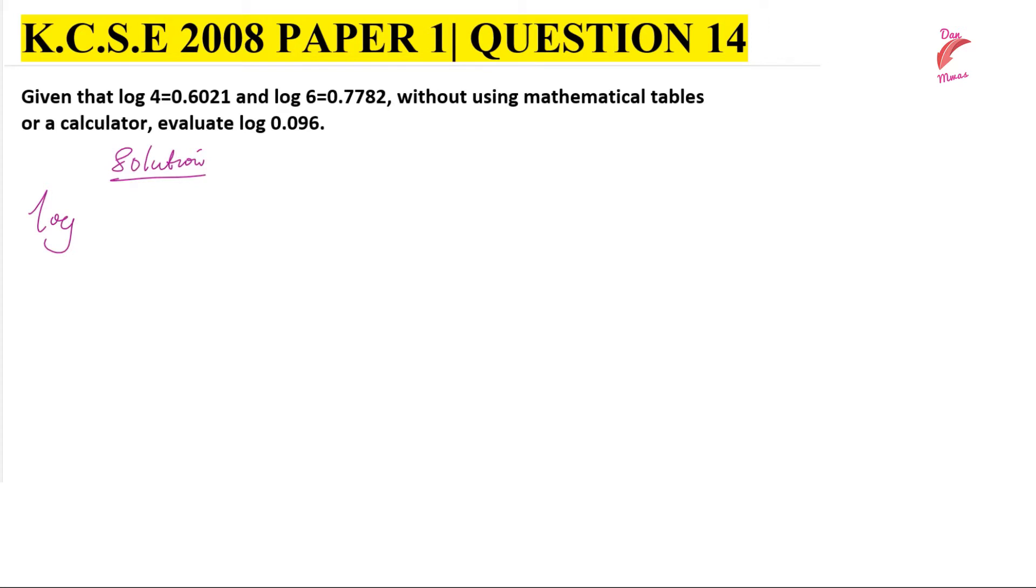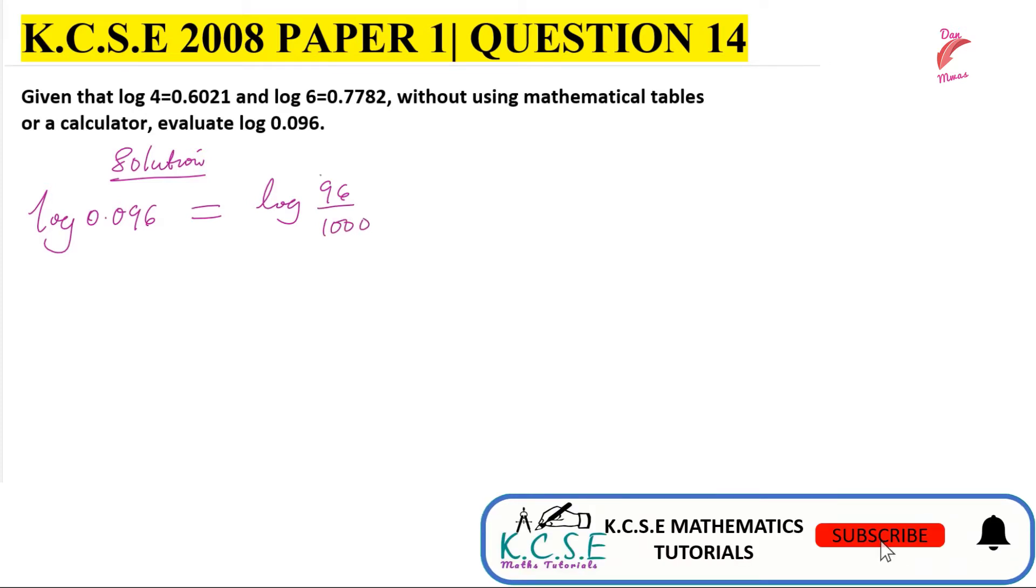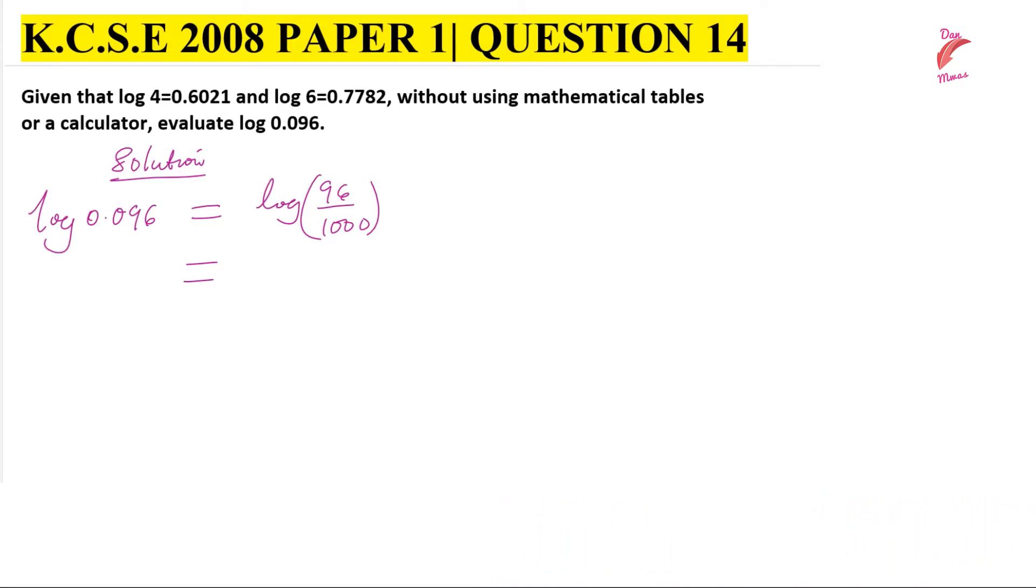We have logarithm of 0.096, so we can write this one in terms of its fraction: log 96 divided by 1000. The second step, we're going to split 96 in terms of its factors.